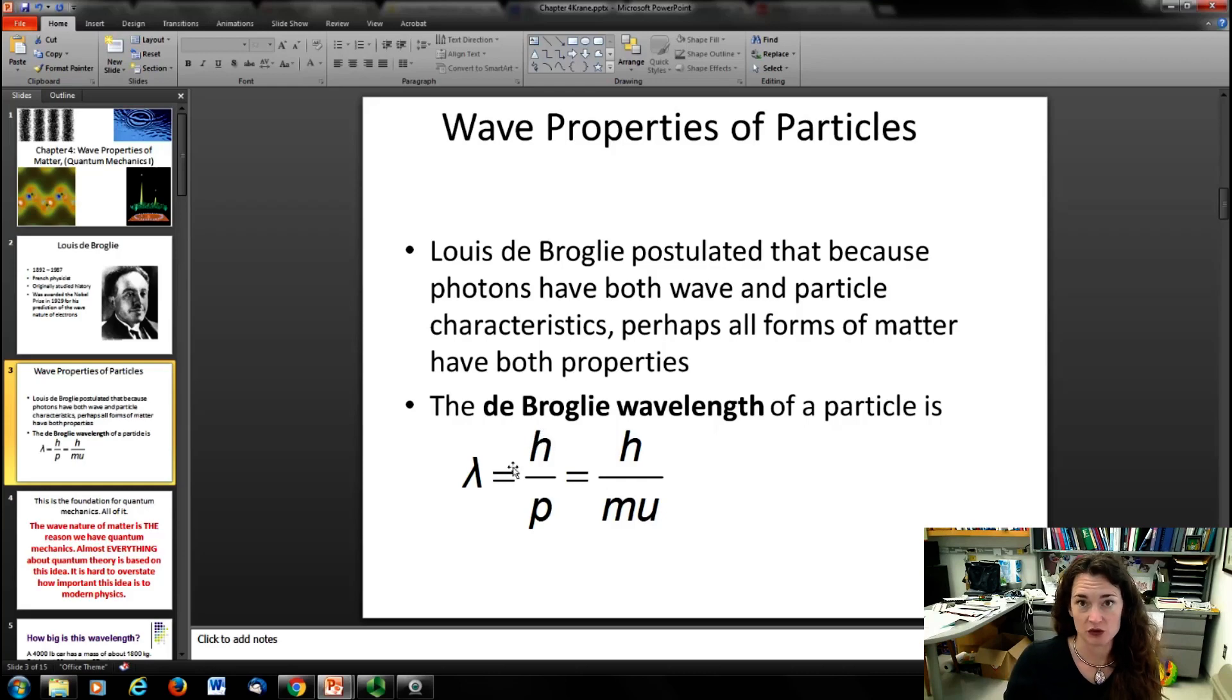And he postulated that this wave would be basically the same wavelength as the wave for a photon. So the wave would be equal to Planck's constant, 6.626 times 10^-34 joule seconds, divided by the momentum of the particle. And of course, we're here using the momentum as the mass times the velocity, h over mu here.